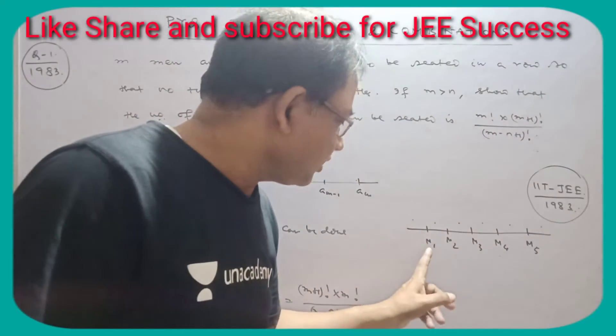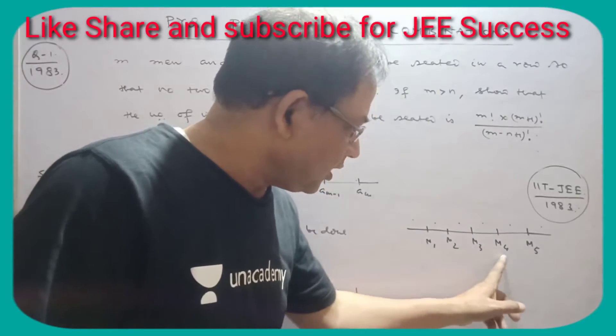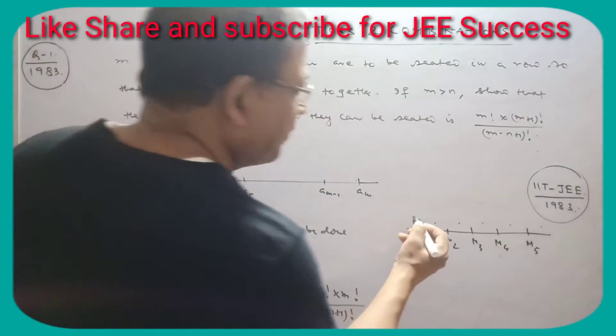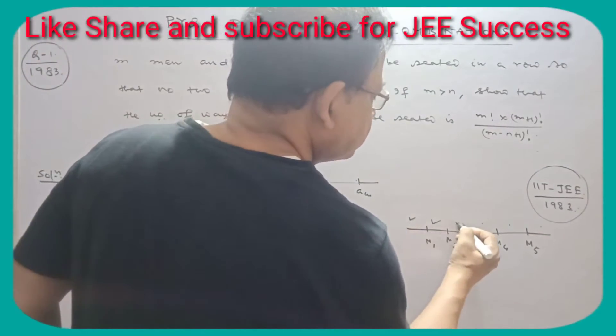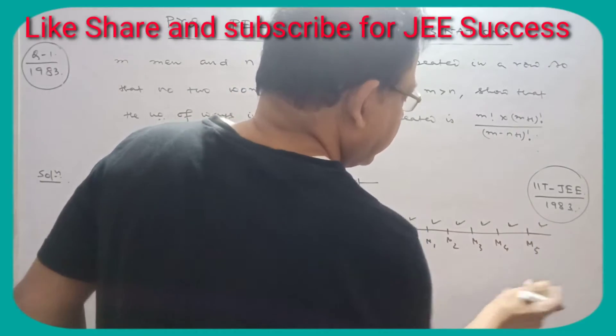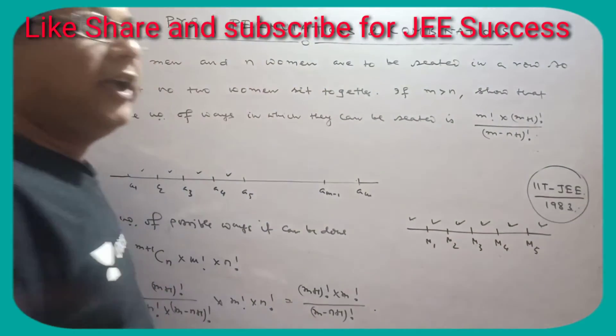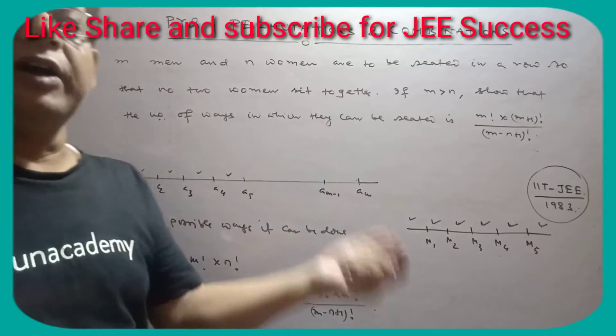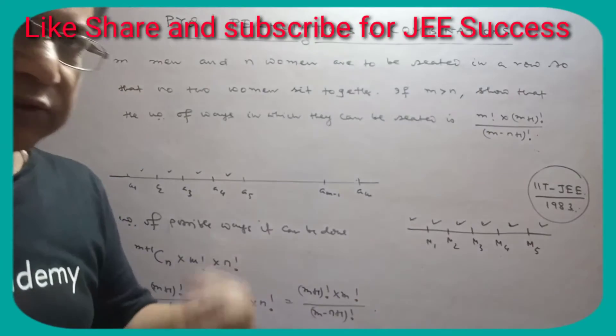For five men, how many gaps are there? Look: 1, 2, 3, 4, 5, 6 gaps. So if the number of men is 5, there are 6 gaps. If number of men is 10, there are 11 gaps. So the number of gaps is M plus 1.